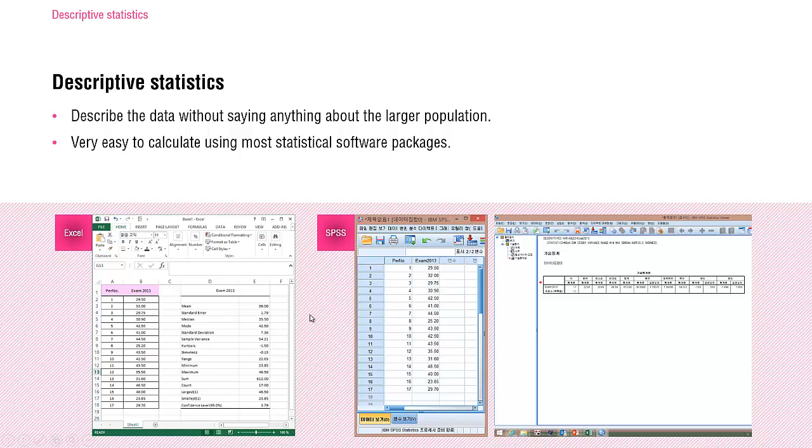Here you are presented with exam scores of the research methodology class in 2013. The 17 scores are listed. You can describe the data in terms of their mean values, variability, etc. You can use Excel or SPSS to see the descriptive statistics very quickly. Let me demonstrate some.